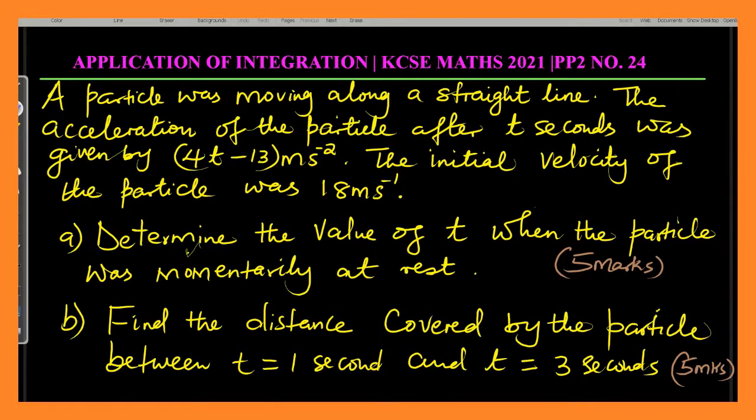The acceleration of the particle after t seconds was given by 4t minus 13 meters per second squared. The initial velocity of the particle was 18 meters per second. Part a: determine the value of t when the particle was momentarily at rest. Part b: find the distance covered by the particle between t equals 1 second and t equals 3 seconds.